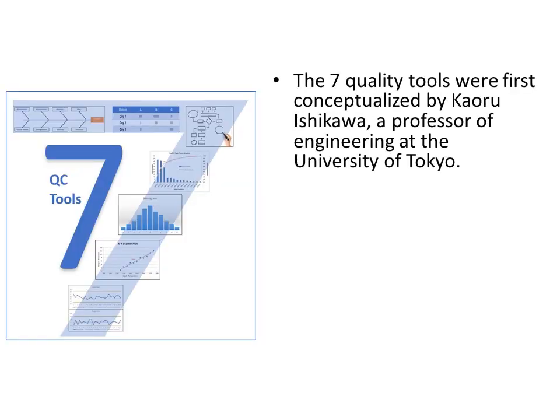The 7 quality tools, or 7 QC tools, were first conceptualized by Kaoru Ishikawa, a professor of engineering at the University of Tokyo.